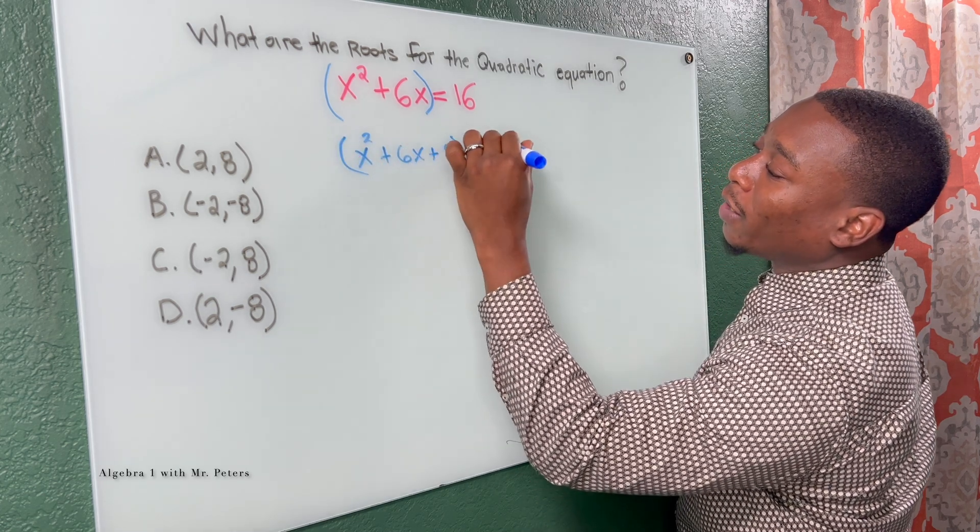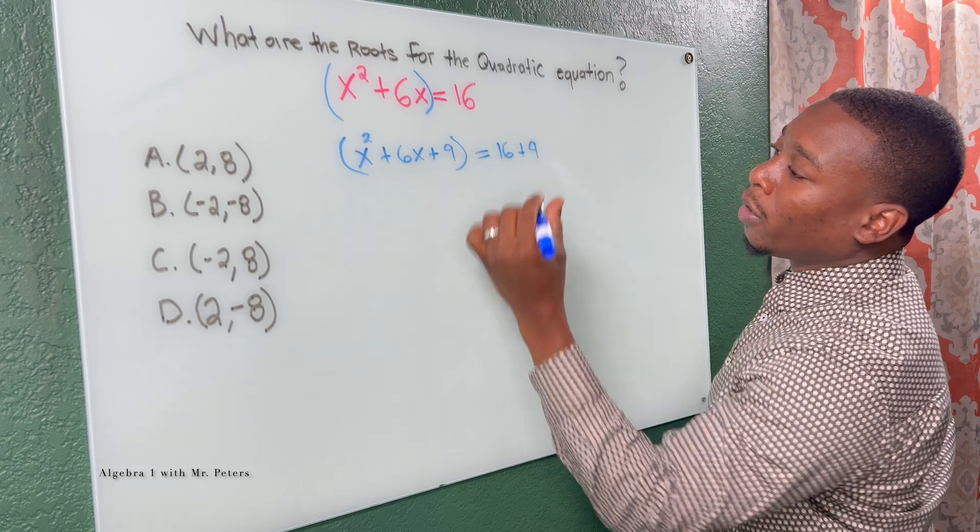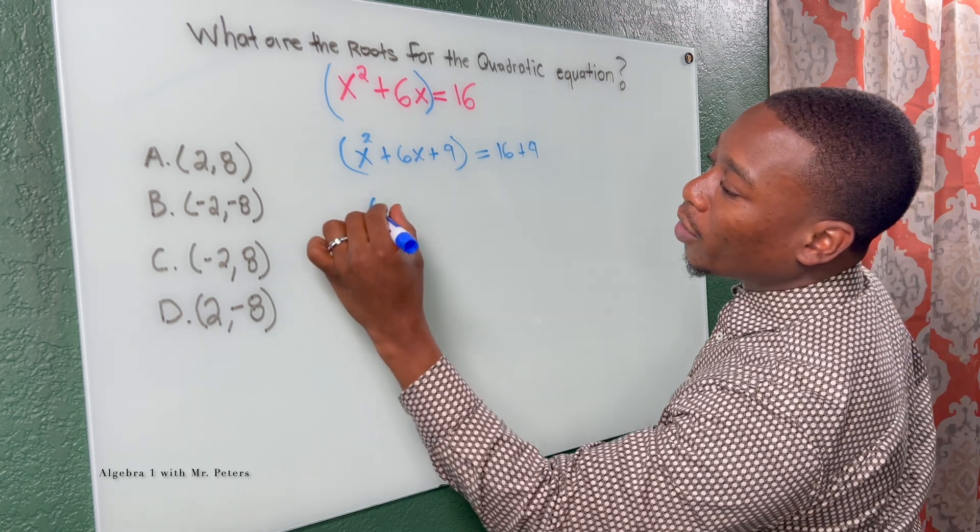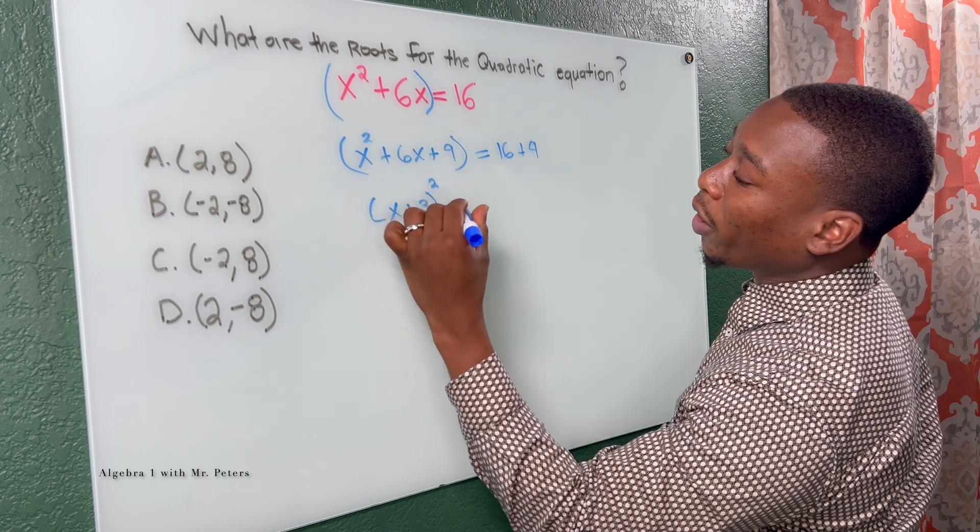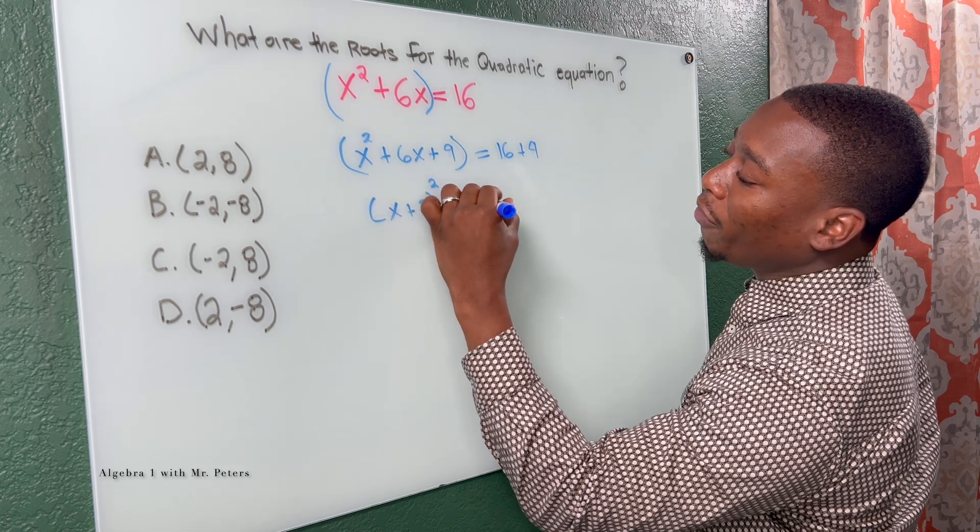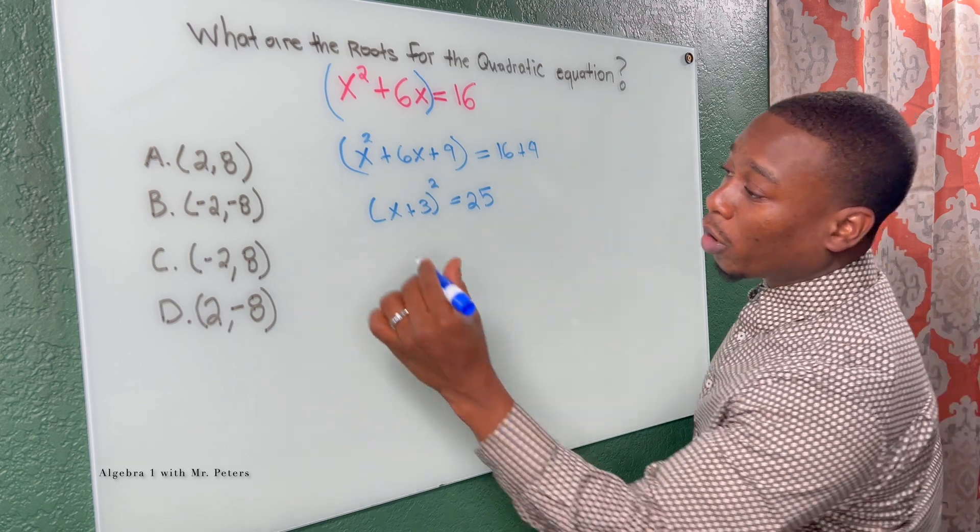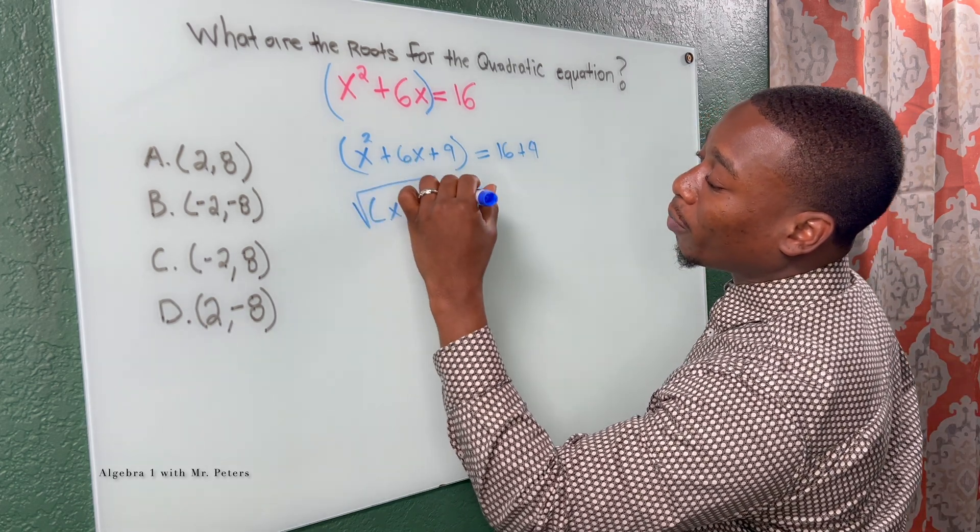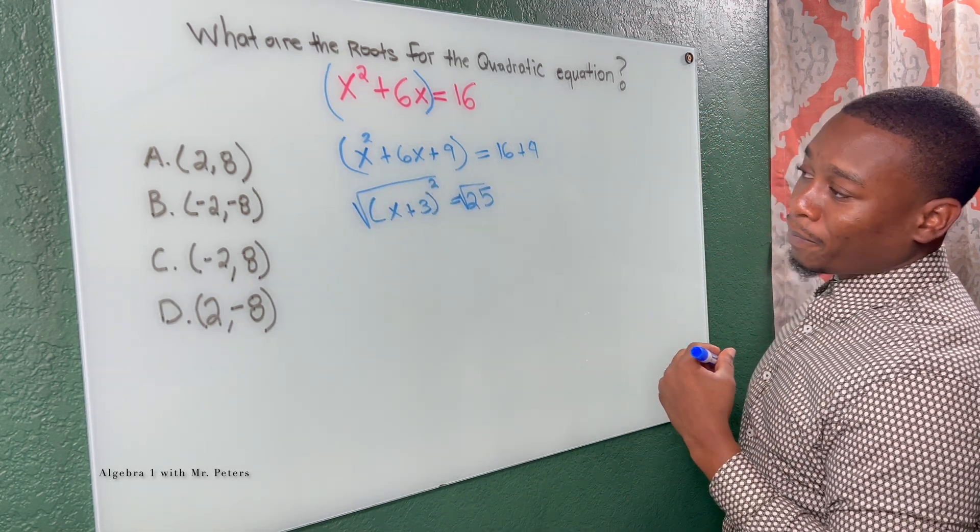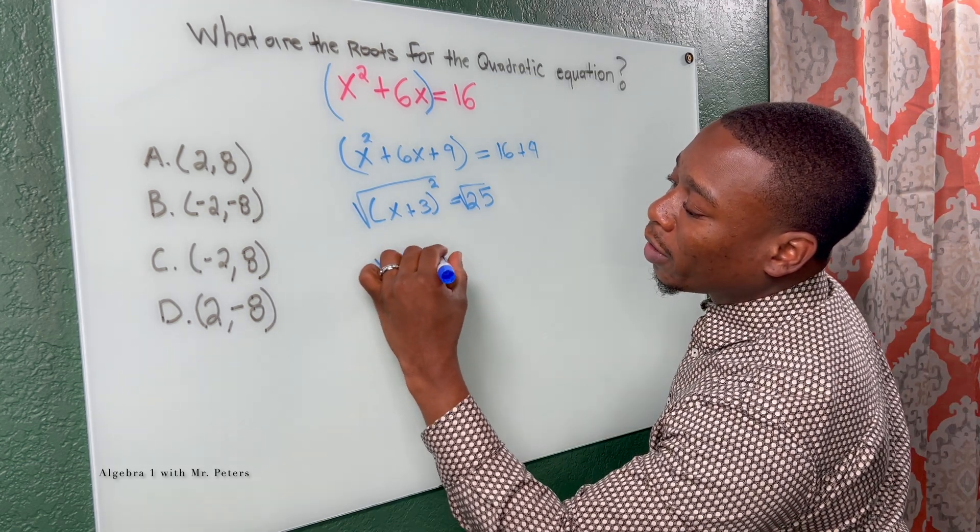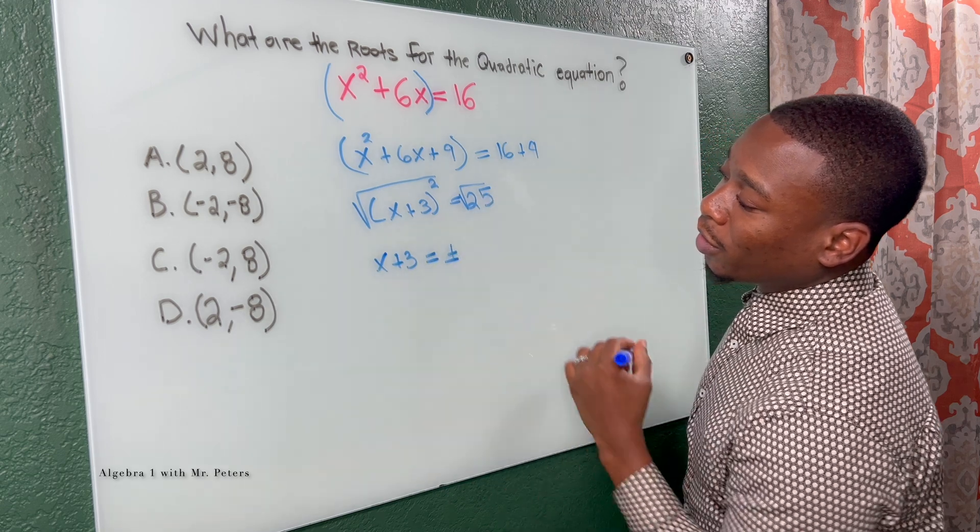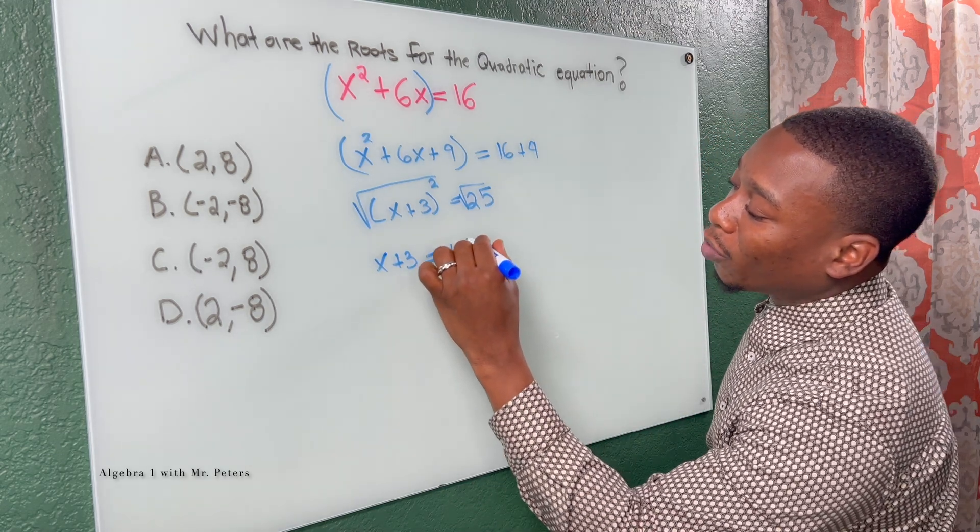And we know we have to add the same thing on the other side. Now I break this back down to its binomial: x plus three squared is equal to 25. Now this turns back into the square root method. So I get rid of my exponent by taking the square root of it. Now we have x plus three is equal to plus or minus the square root of 25, which is five.